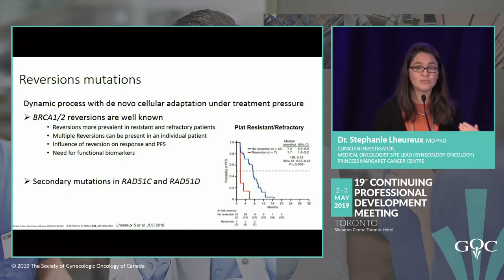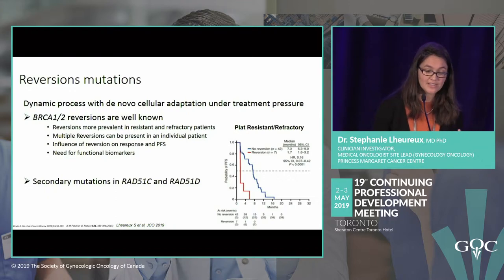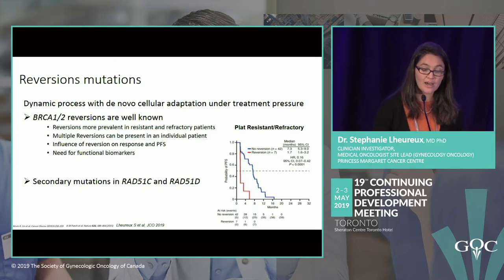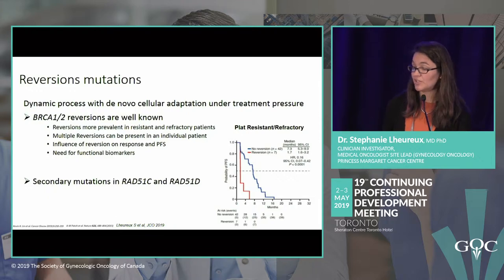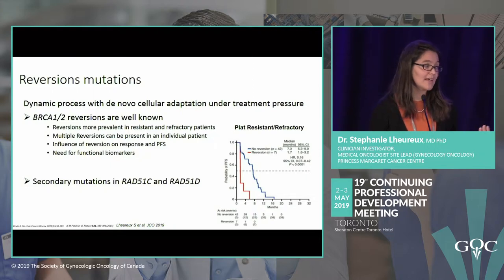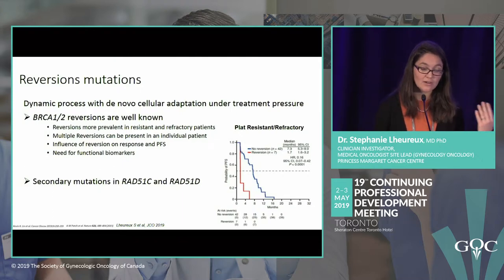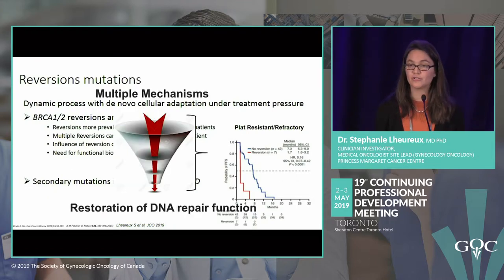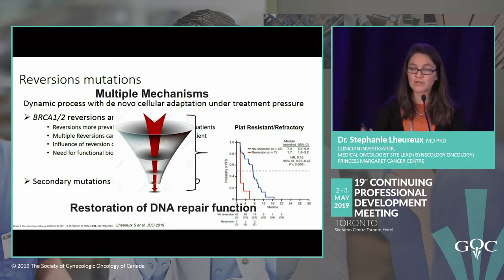Patients with BRCA mutation who develop a reversion BRCA mutation have a significantly worse outcome and are resistant to further PARP inhibitor treatment. We need biomarkers to identify these patients — circulating tumor DNA may be a useful tool. Reversion mutations can also occur in other DNA repair genes such as RAD51C or RAD51D. Multiple mechanisms lead to resistance, all grouped under restoration of DNA repair function.